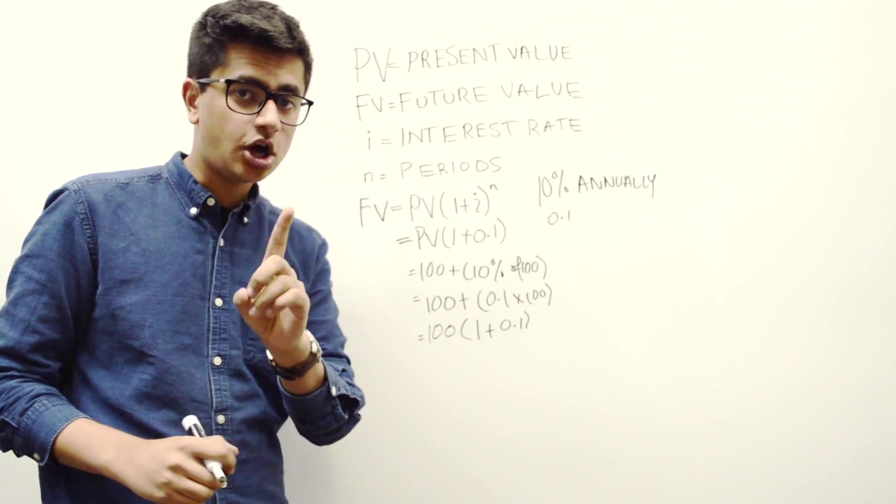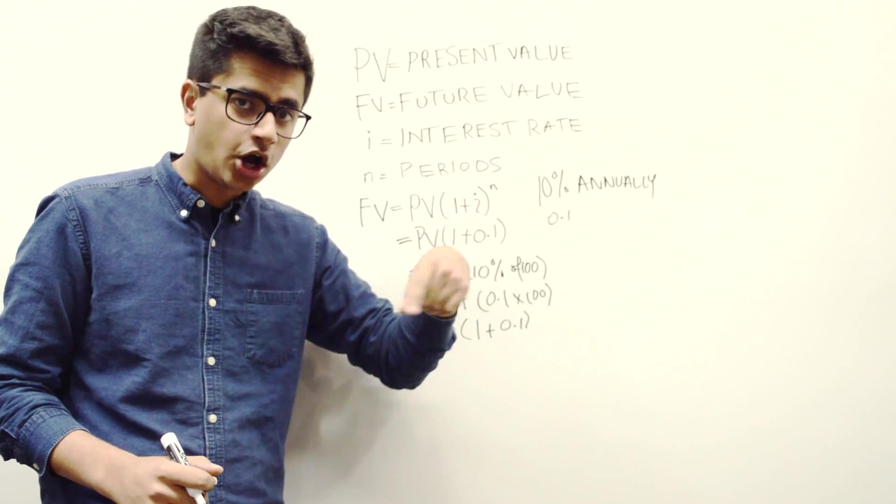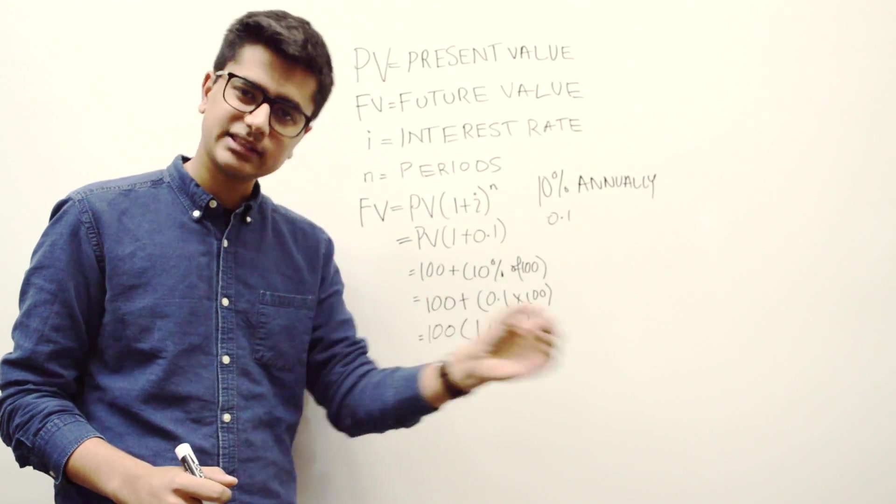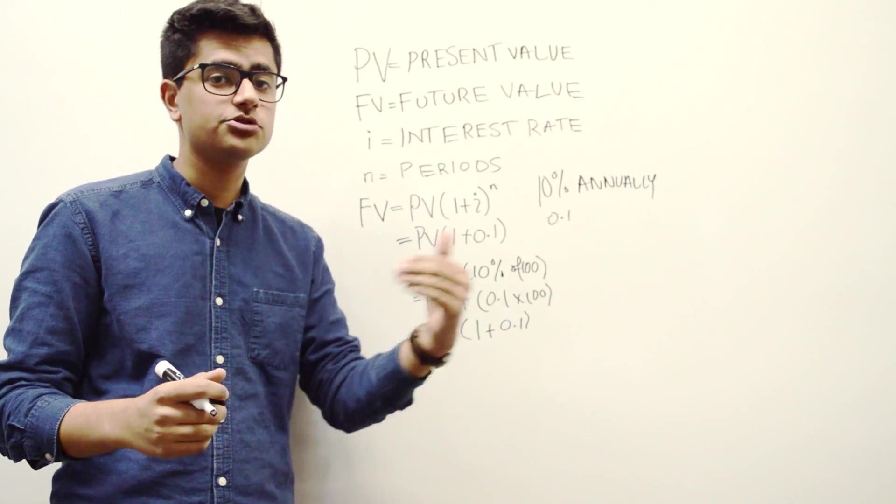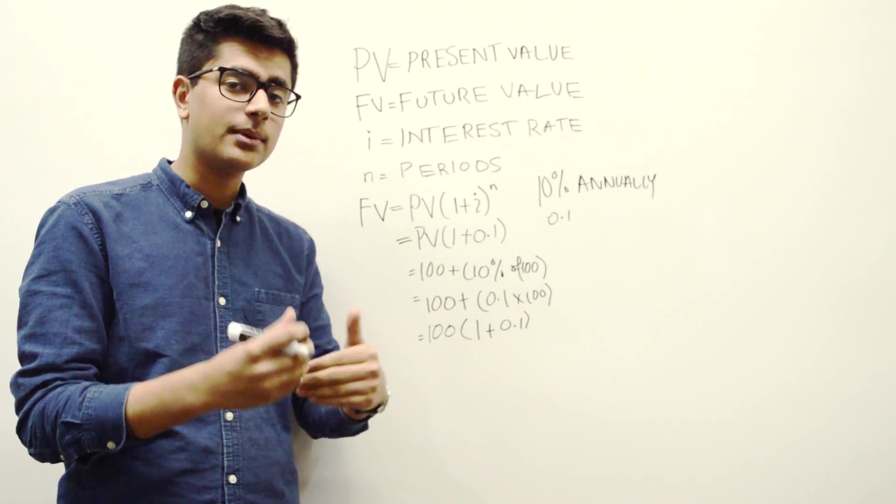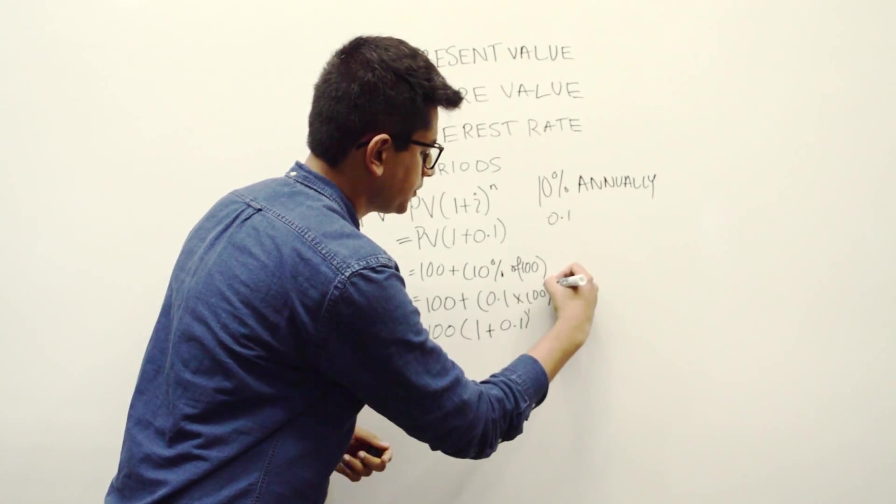So since your money is only compounded once, you put your money into the bank, you wait one year, they compound the money once, and then you take your money out. You only did it once. The period of time your money spent in the bank was one. So we raise this to the exponent of one.